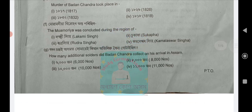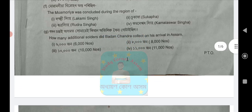Next, question F2: The murder was concluded during the reign of Lakhmi — Sukafa, Rudra, or Komolesar? Next question Z: How many additional soldiers did Badonsandra collect on his arrival in Assam? Options: 6,000, 8,000, 10,000, or 11,000. The answer is option number 2: 8,000.